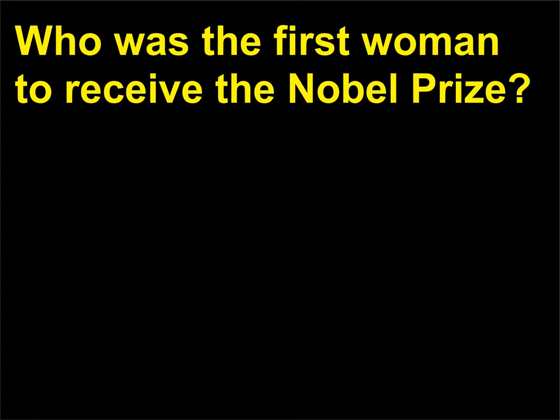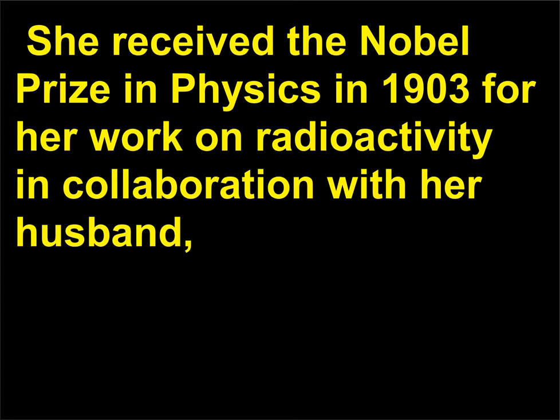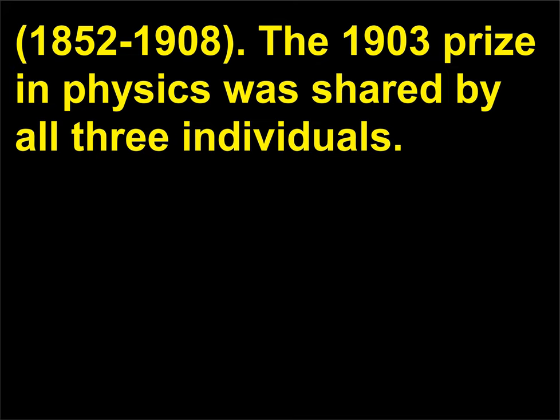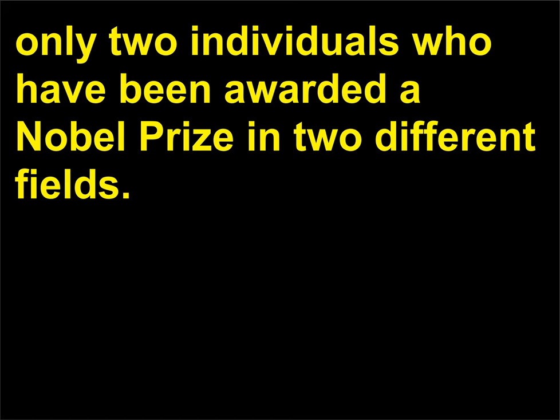Who was the first woman to receive the Nobel Prize? Marie Curie was the first woman to receive the Nobel Prize. She received the Nobel Prize in Physics in 1903 for her work on radioactivity in collaboration with her husband Pierre Curie, 1859–1906, and A.H. Becquerel, 1852–1908 — the 1903 Prize in Physics was shared by all three individuals. Marie Curie was also the first person to be awarded two Nobel Prizes and is one of only two individuals awarded a Nobel Prize in two different fields.